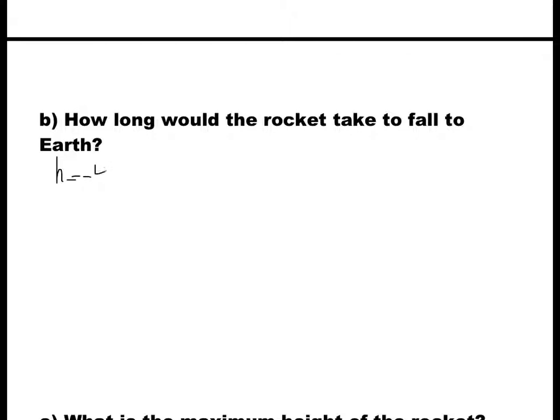Part b asks when is the rocket going to fall to earth. We found that h equals negative 4.9t squared plus 60t plus 3. When the rocket hits the earth, the height is zero, so we set this equal to zero.